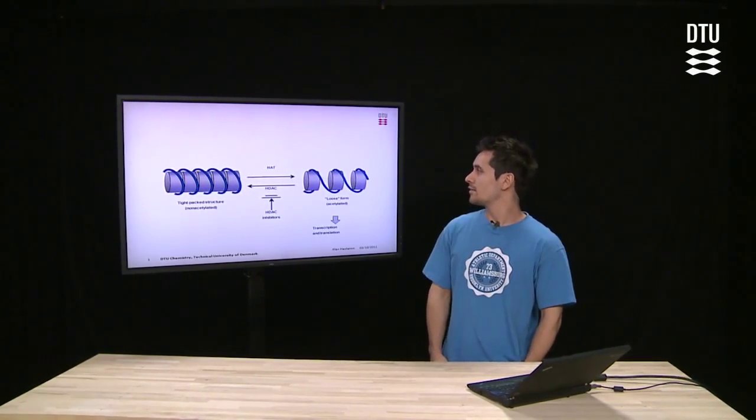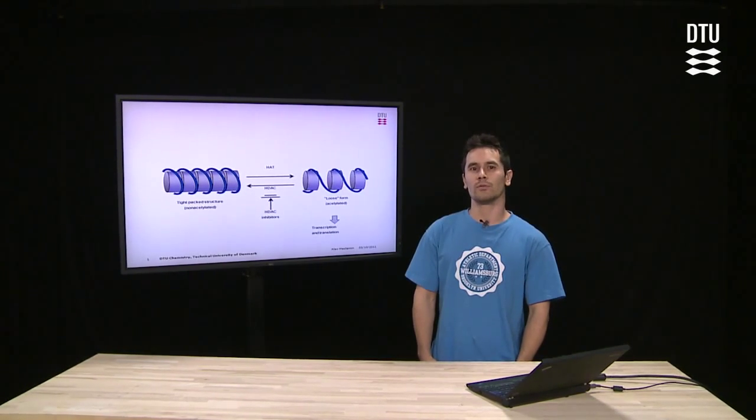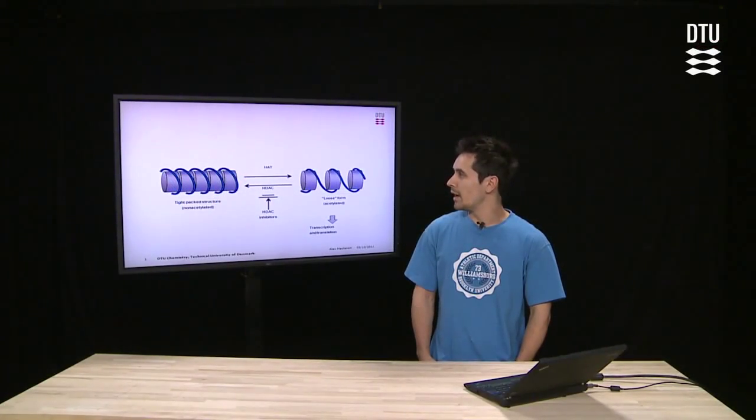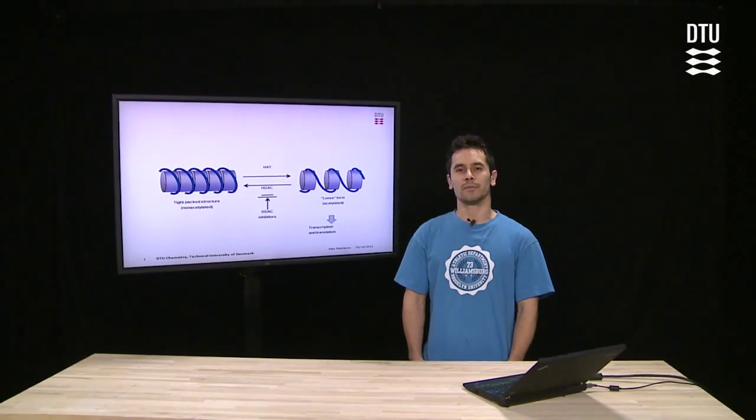Histone acetyltransferase catalyzes the acetylation of the histones, which will result in a more loose form of the structure. Histone deacetylation catalyzes the reverse reaction, thereby making a more tightly packed structure.